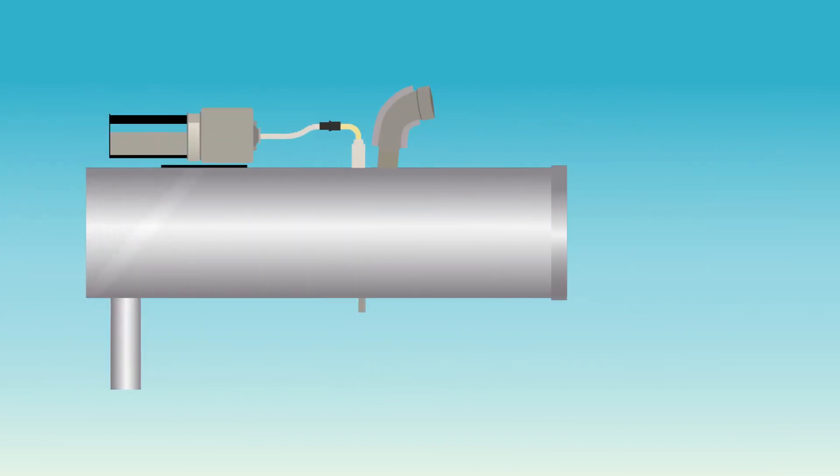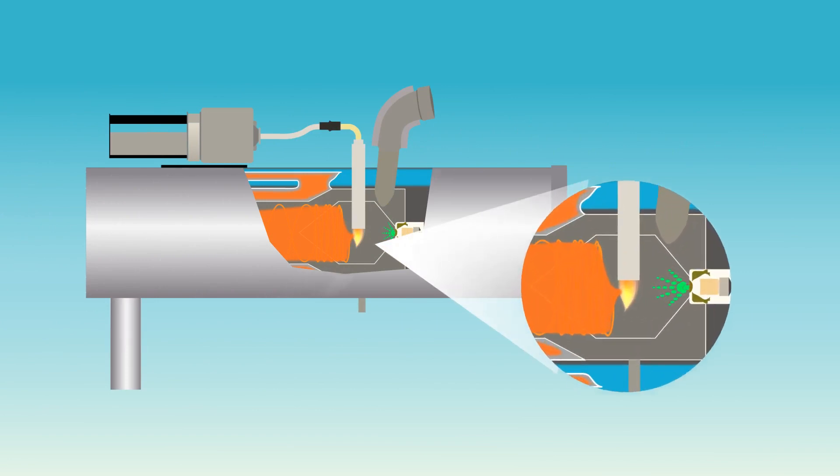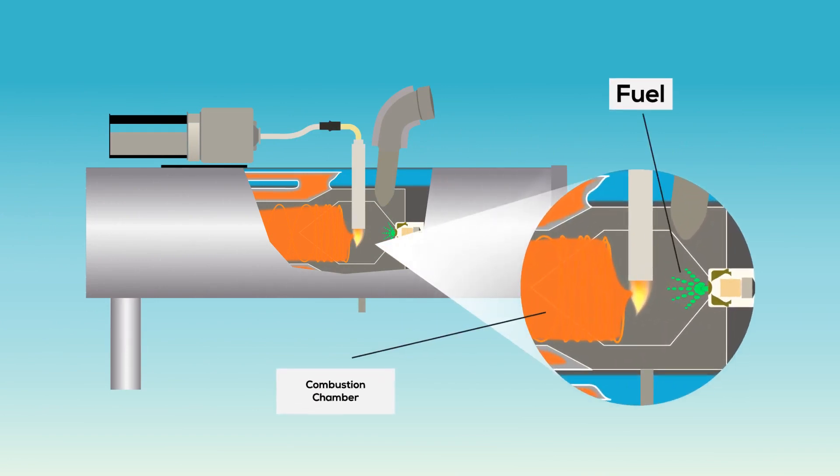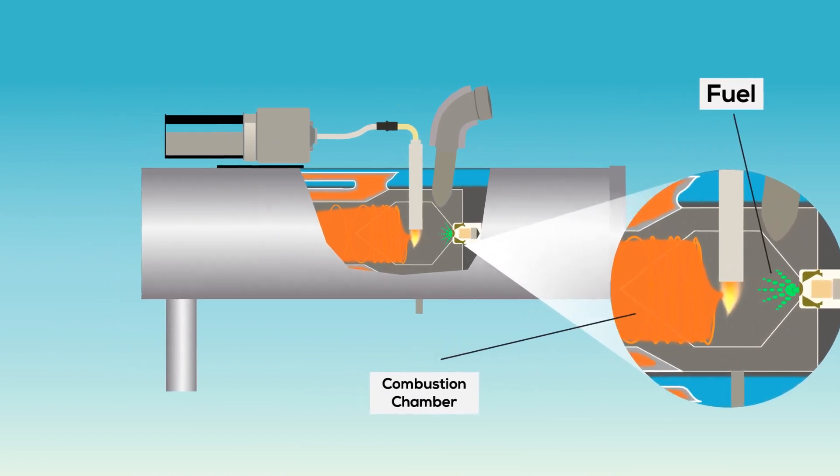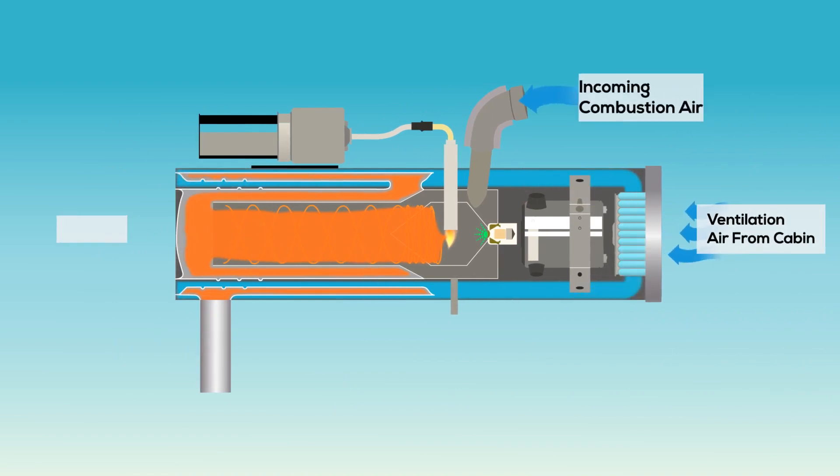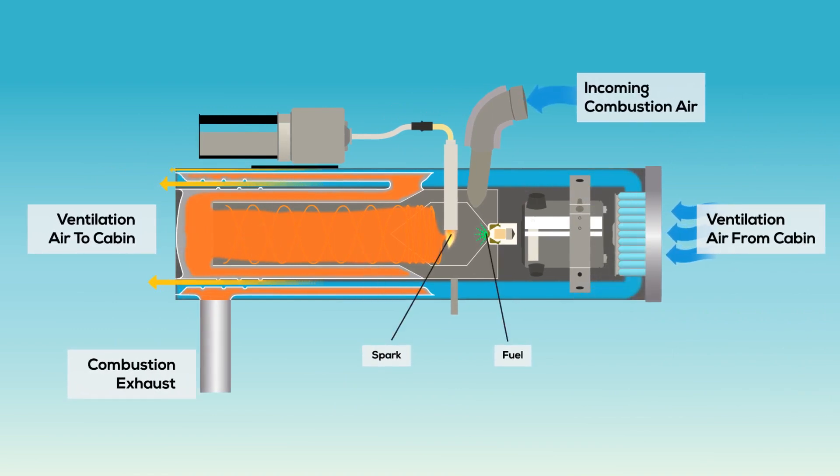A combustion heater consists of an airtight combustion chamber with a metal jacket. This type of heater burns the aircraft's fuel in a combustion chamber to develop required heat. Ventilation air flows around the outside of the chamber within the metal jacket, absorbing the heat, and is ducted to the cabin.